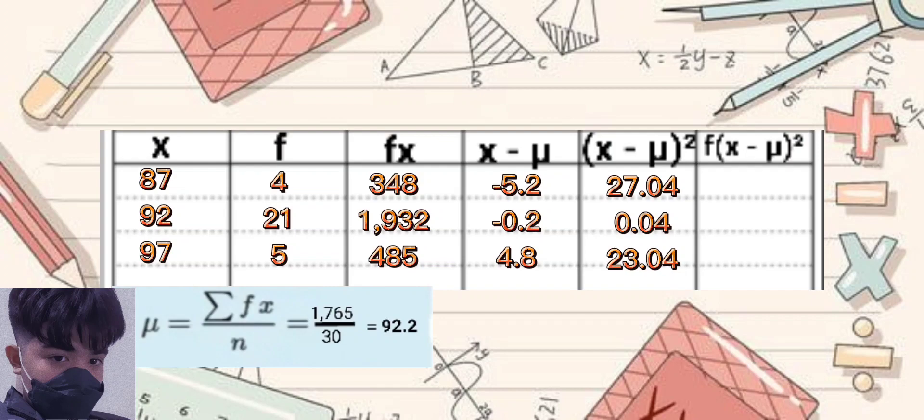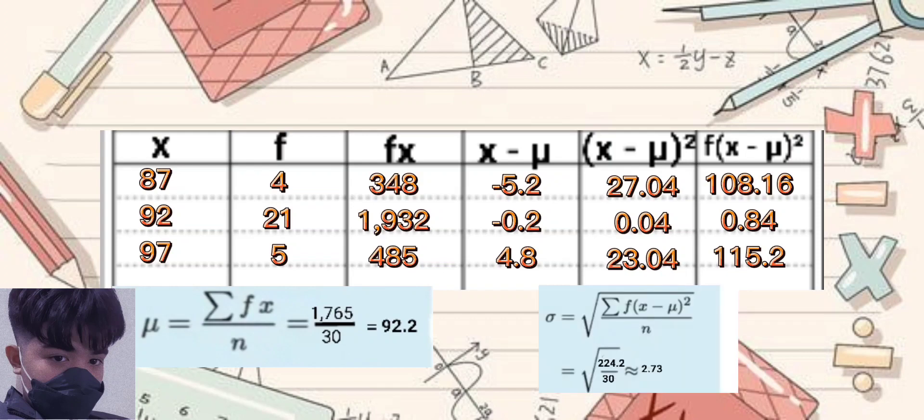Then, for the last part, multiply the previous column by frequency and add up the column. Now, to get the standard deviation, we will divide the total values of sixth and second column, then get its root. And for the results of our given data, our standard deviation will be 2.73.